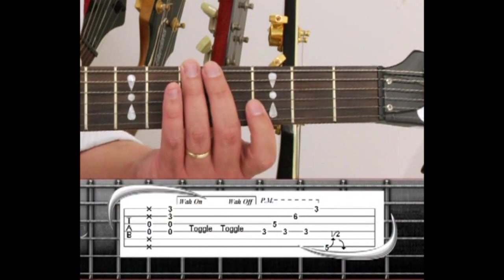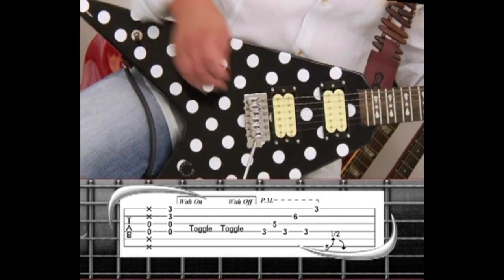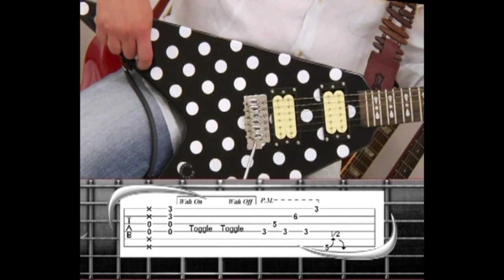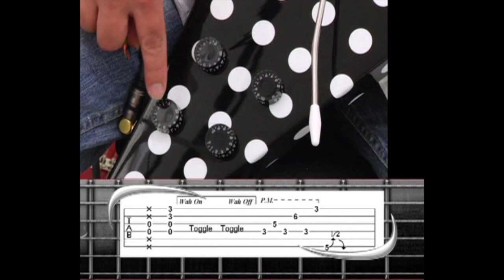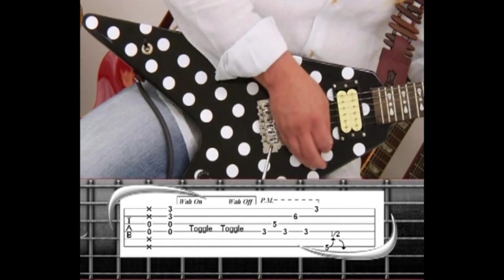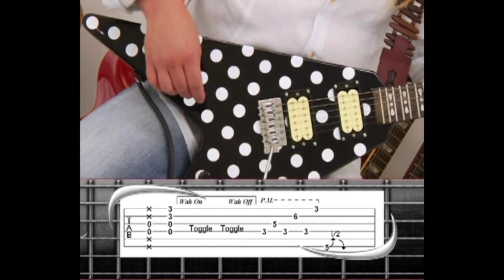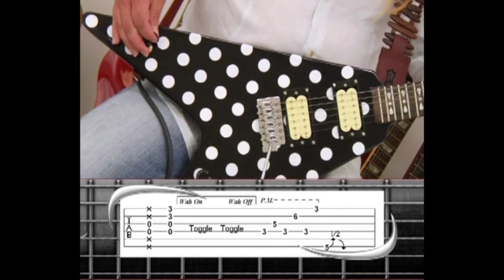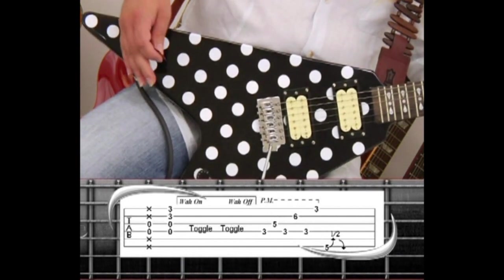Another technique Randy used was to toggle the pickups on and off in time with the music. This is achieved by turning the volume and tone knobs all the way down for the neck pickup. And with the bridge pickups on, you're able to toggle back and forth.